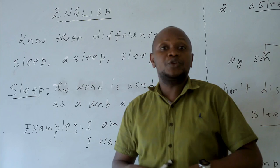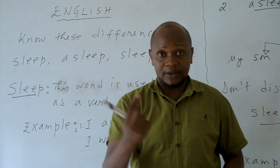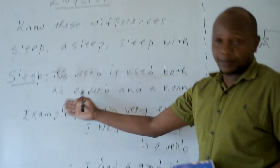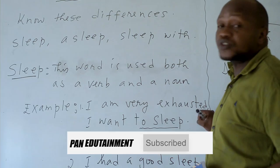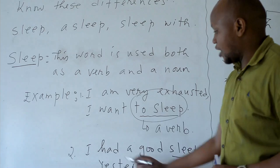You can also use sleep as a noun. For example, when you say: have a good sleep. These are other examples for the word sleep. I am very exhausted. I want to sleep — here, 'to sleep' is a verb. Then: I had a good sleep yesterday — here, 'sleep' is a noun.